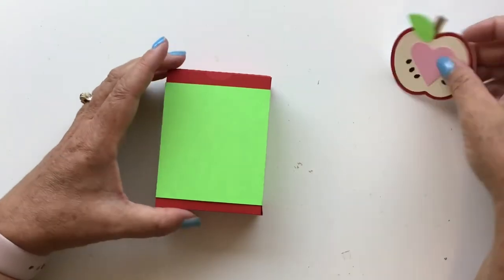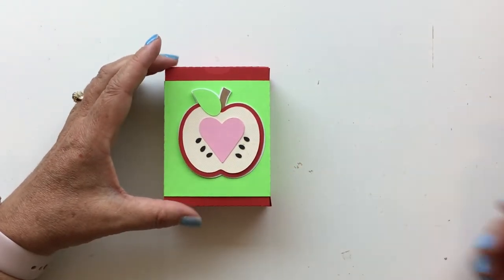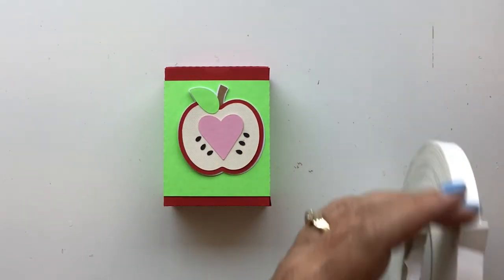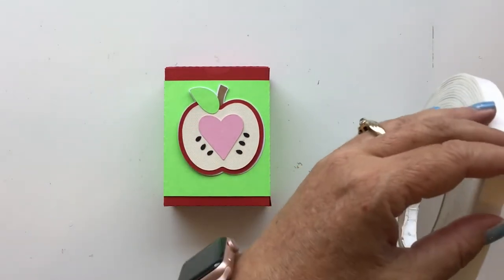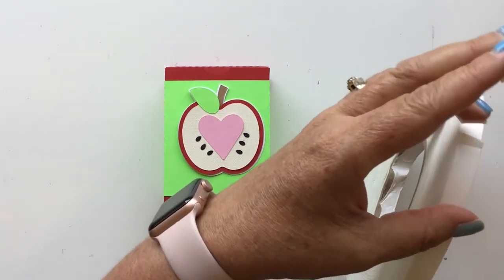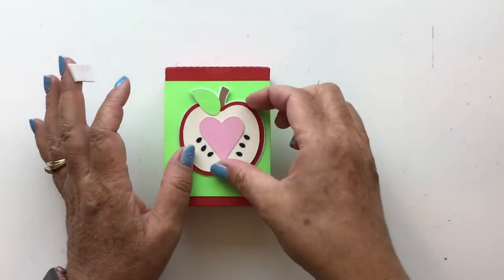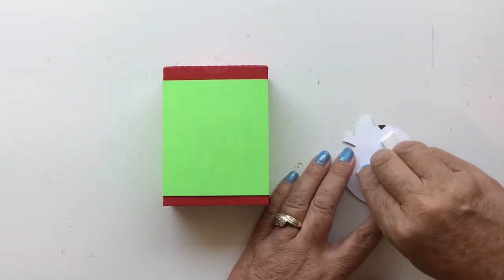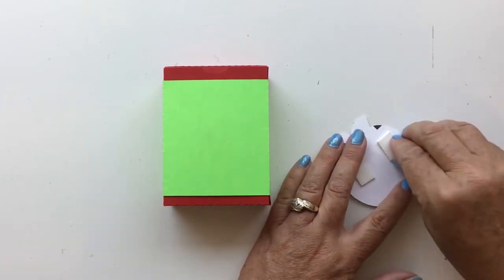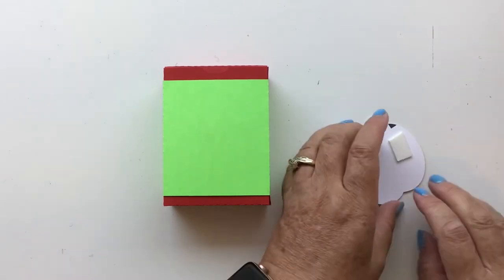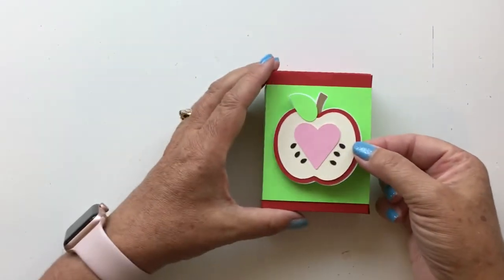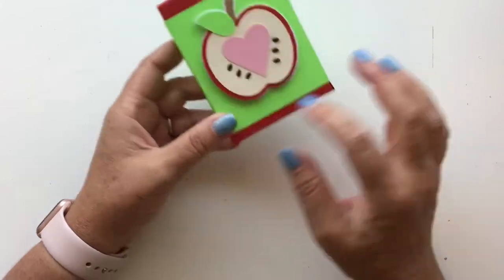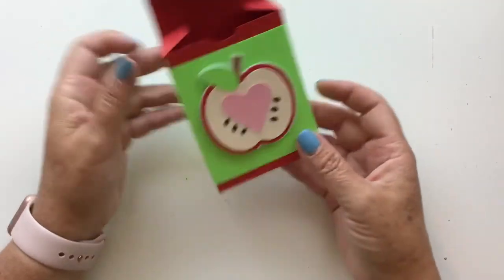We're just going to go ahead and put our apple right on there. You could do it with tape or glue. I'm going to use my foam pop dots, my foam tape. It's already pretty thick because of all the layers, but I kind of like it just popped up a little bit for some more dimension. So add that on there.